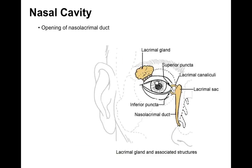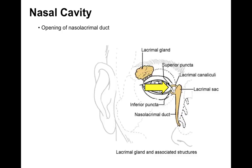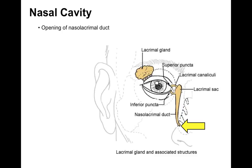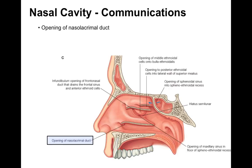The lacrimal gland, under innervation of the facial nerve via the greater petrosal branch, causes you to cry. Seven makes you cry, closes your eye, and innervates every gland in the head except the one it goes through — here it innervates the lacrimal gland. Tears wash across the eye to keep it moist, then excess tears go into canaliculi that drain into the lacrimal sac, down the nasal lacrimal duct, and enter the nasal cavity in the inferior meatus.